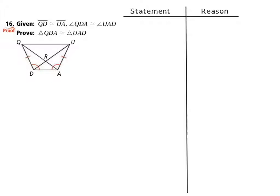Okay, so we're doing this proof. We've got some given information and we're trying to prove that triangle QDA is congruent to triangle UAD. I'm going to highlight them in red and blue - QDA, this triangle